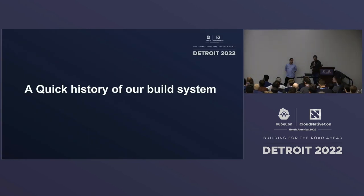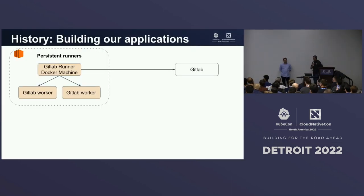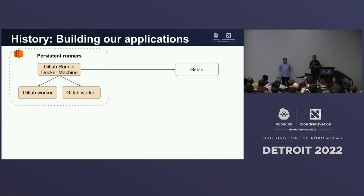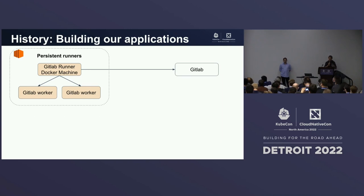Before we dive into an interesting issue, let's do a quick overview of how we build things at Datadog. Quite a while back — up to four or five years ago — we were using a very simple setup to build our applications. We had GitLab runners pulling jobs from GitLab and using Docker machine to provision AWS instances and running jobs on them, so pretty standard, pretty simple.